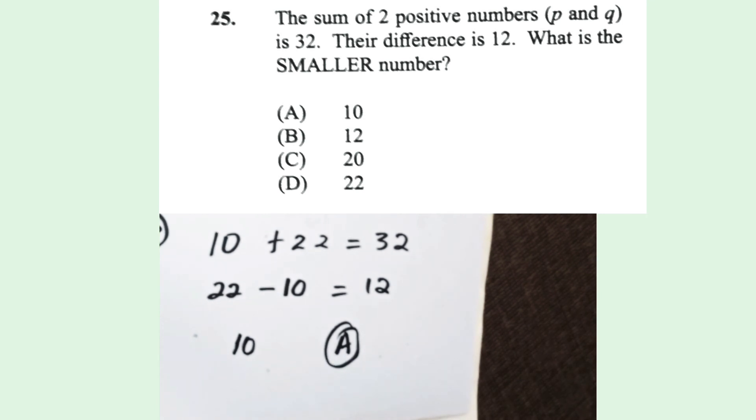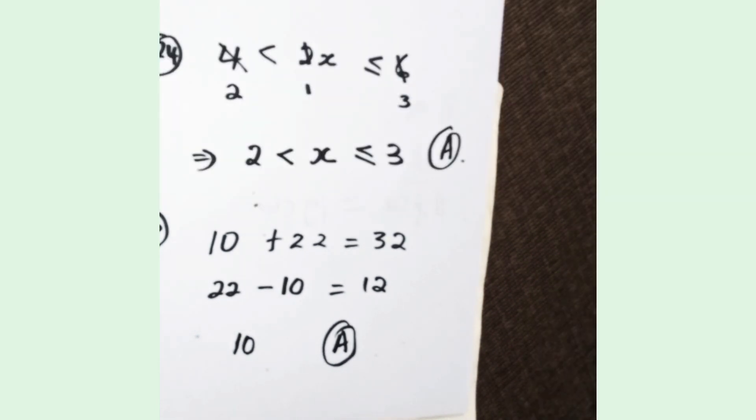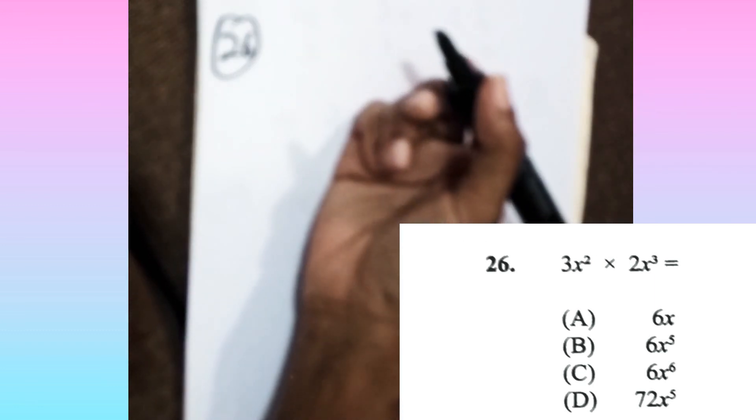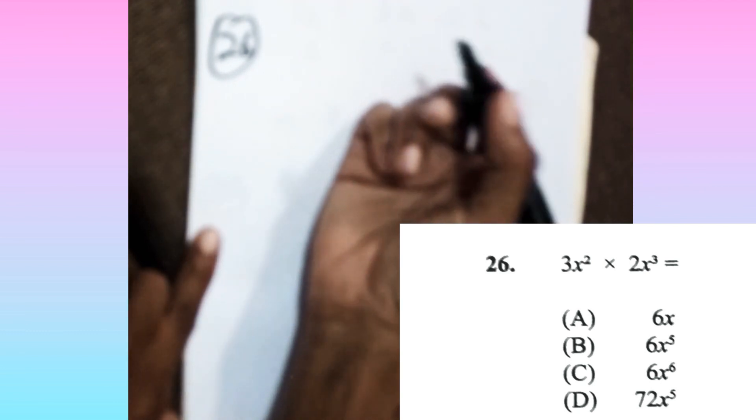Remember guys, re-read your question and make sure you are giving what the question is asking you for. Now 26 is asking you to multiply two algebraic expressions.